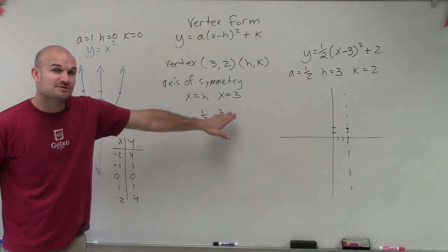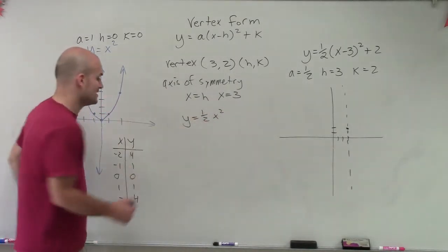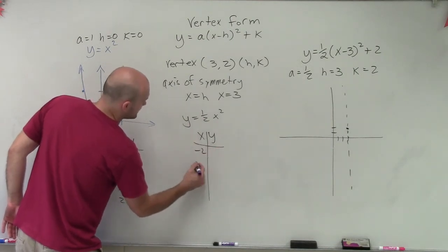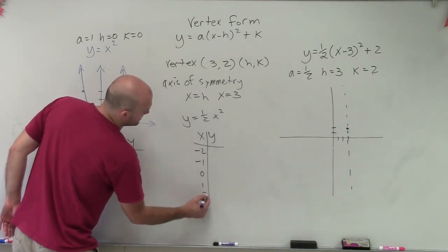Well, let's look at what happens with my table of values if I'm multiplying them by 1/2. So if I do an xy table, I'll do negative 2, negative 1, 0, 1, and 2.